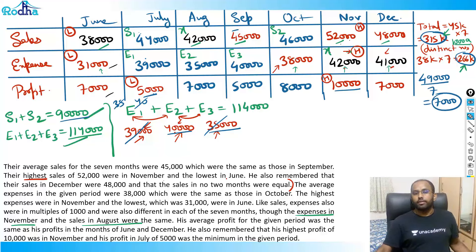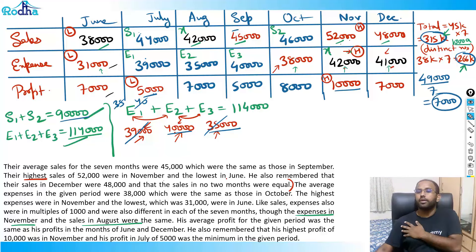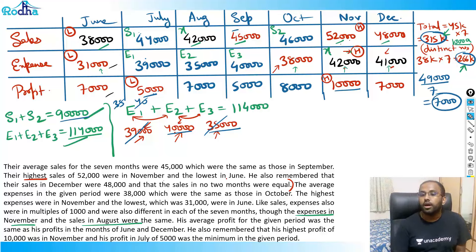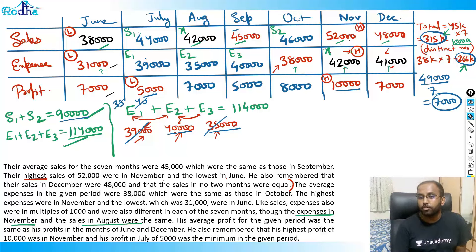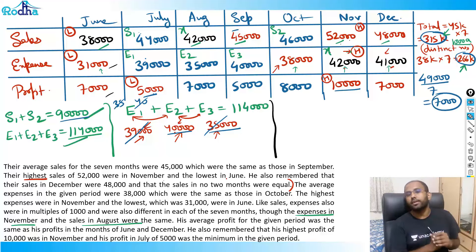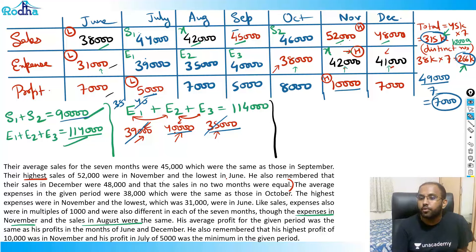That's a fantastic set - a really good, perfect CAT level set. Like this, we are going to solve 450 plus LRDA sets in my new CAT 21 batch.